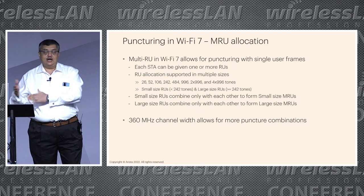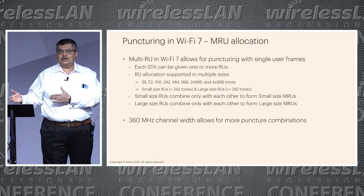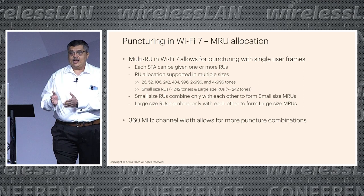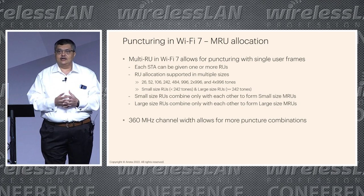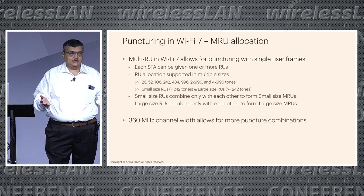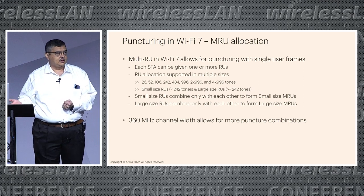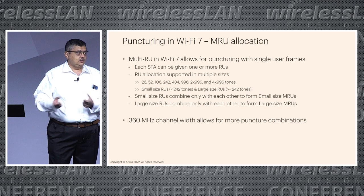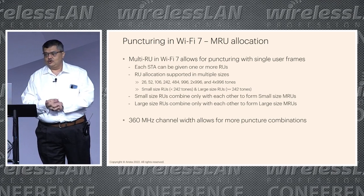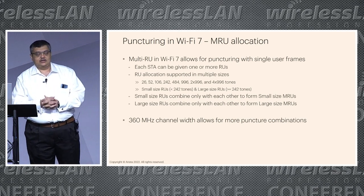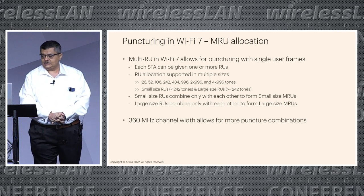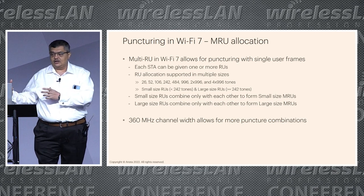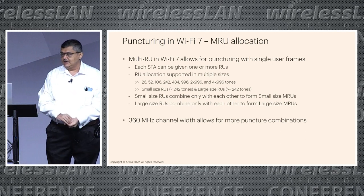With Wi-Fi 7, because we now have multi-RU allocations, what happens is that in Wi-Fi 6, without MRUs, any single client cannot be allocated more than one RU in an OFDMA transmission. So you can only use preamble puncturing when you have multiple clients — you can't use it in a single user frame. But with the multi-RU capability of Wi-Fi 7, where a client can be allocated multiple RUs, you can actually use preamble puncturing in a single user frame as well. RUs can be allocated in small or large sizes, and you need to be able to puncture any 20MHz channel based on where you are allocating these RUs.